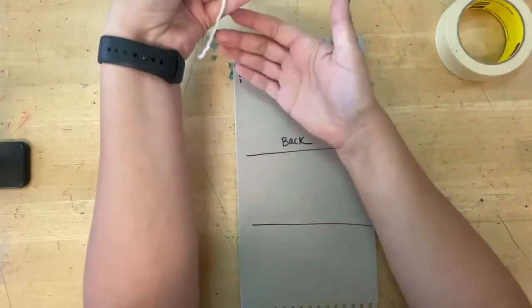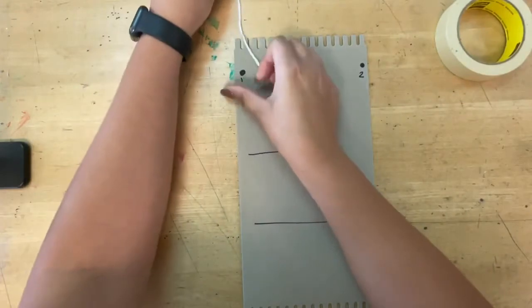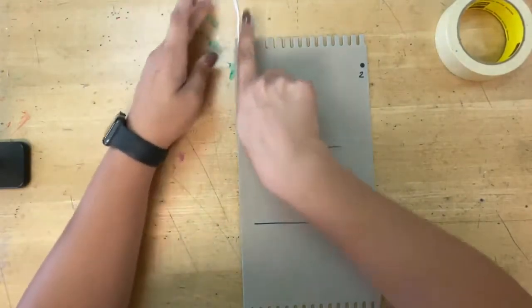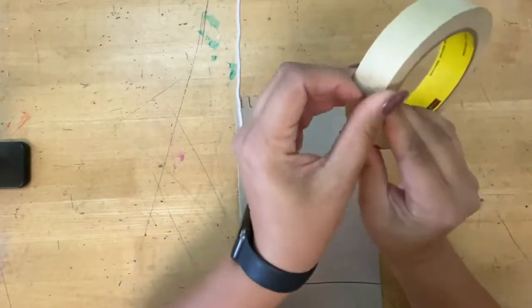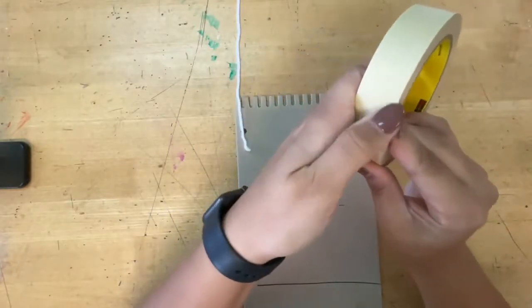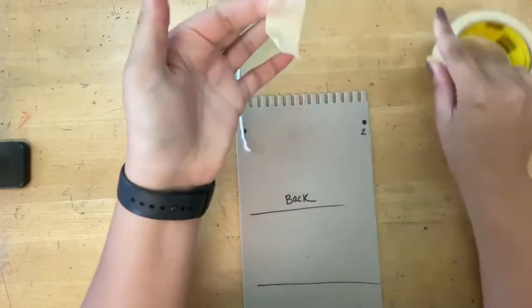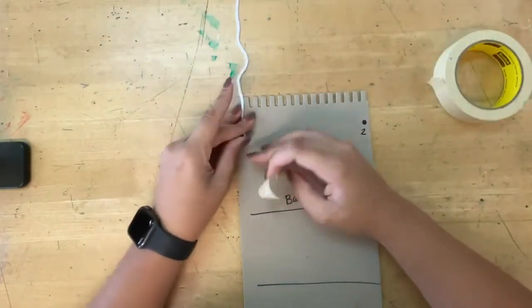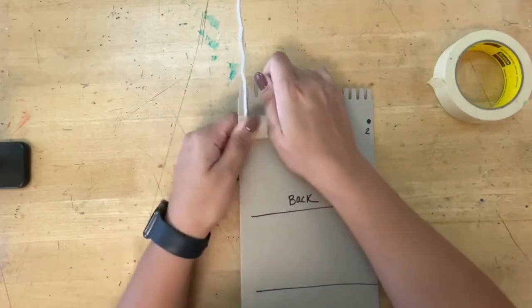First thing we want to do is take the end of our string, put it on dot one facing up. Notice how it's facing up, I have the string going up. Then you're going to take another small piece of tape, about one inch, and you're going to tape your string to dot one. Just like that.